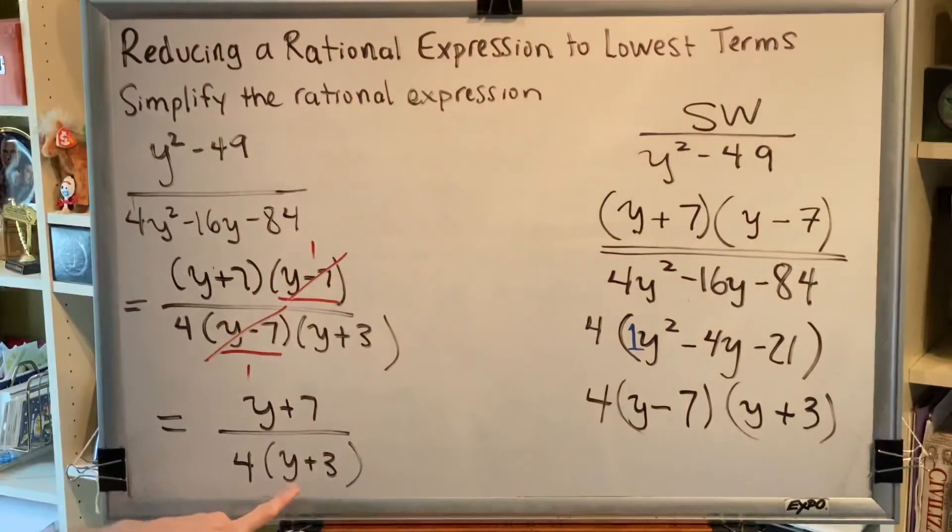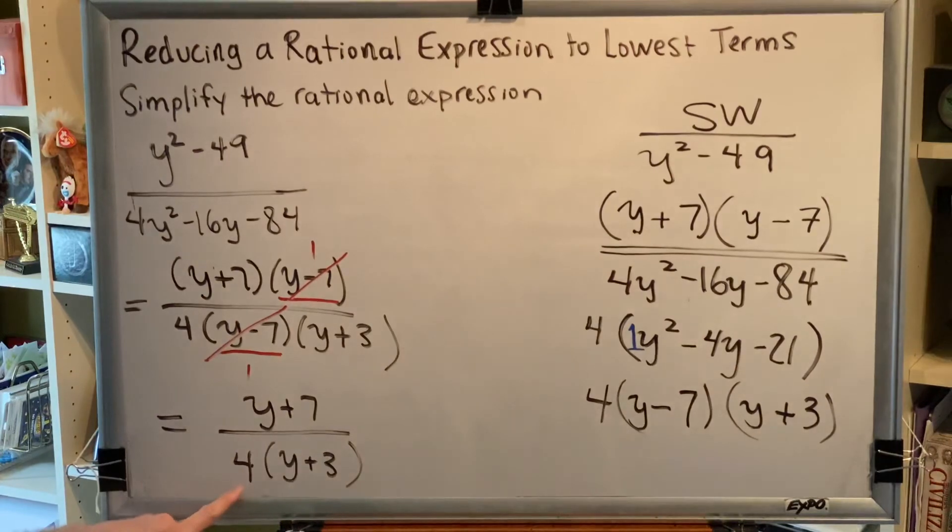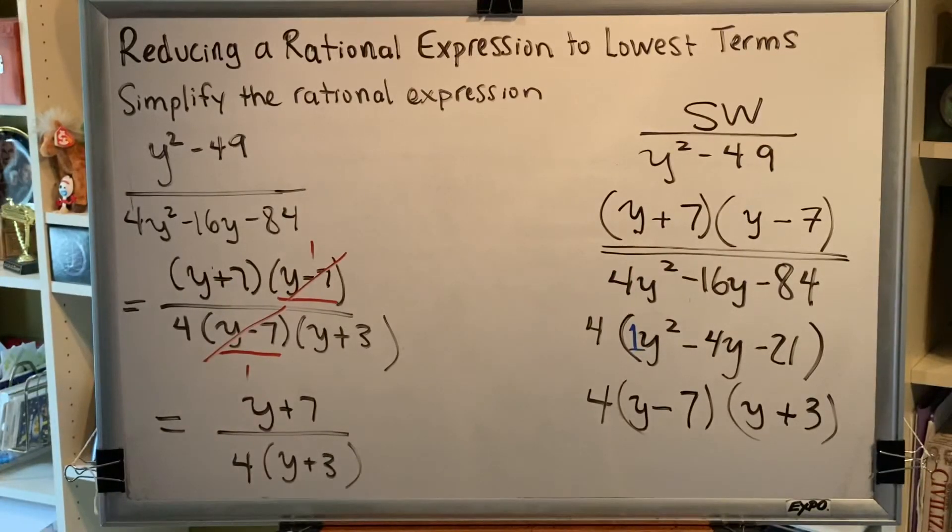Why? Because the denominator factor has a multiplying neighbor, this 4. Whereas the numerator factor does not.